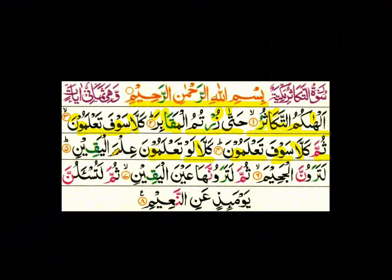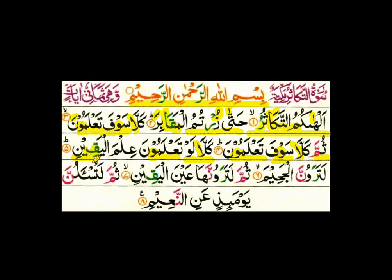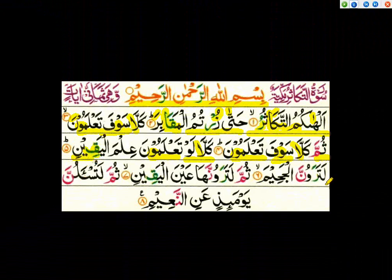Kalla — this is alif madda. Low — this waw is waw lean. Ta'alamoon — this waw is waw madda, prolong it. Ilmal yaqeen — of is one of the bold letters. Yaqeen has a ya madda here. I already discussed alif madda and waw madda; now it is the turn of ya madda. We have three alif madda letters: alif madda, waw madda, and ya madda. If we have ya sakin and the letter before ya sakin has kasra below it, it is called ya madda. Ilmal yaqeen — prolong ya madda equal to one alif.